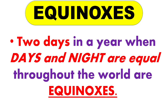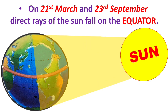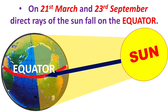The next very important term is equinoxes. Two days in a year when days and nights are equal throughout the world are called equinoxes. These occur on 21st March and 23rd September. On these days, direct rays of the sun fall on the equator and neither pole is tilted toward the sun.